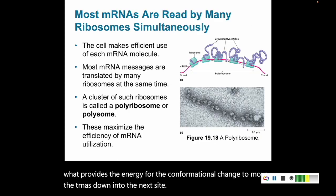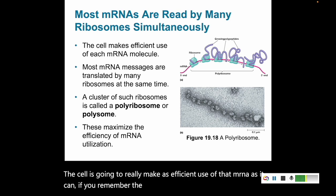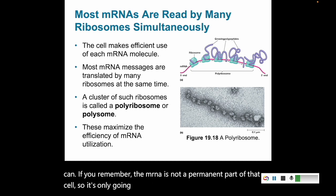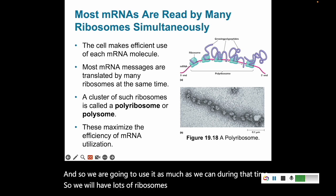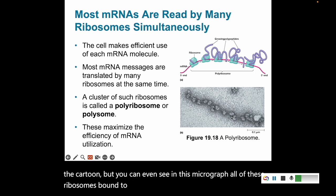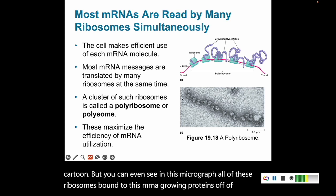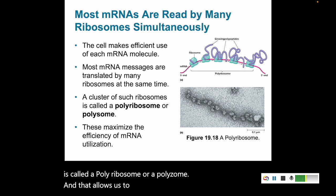The cell makes as efficient use of that mRNA as it can. The mRNA is not a permanent part of the cell — it's only there for minutes, hours, maybe days — so we use it as much as possible. We'll have lots of ribosomes bound to it, as shown in the cartoon, and you can also see in this micrograph all of these ribosomes bound to one mRNA, each growing proteins. This is called a polyribosome or polysome, and it allows maximum efficiency in creating the proteins we need.